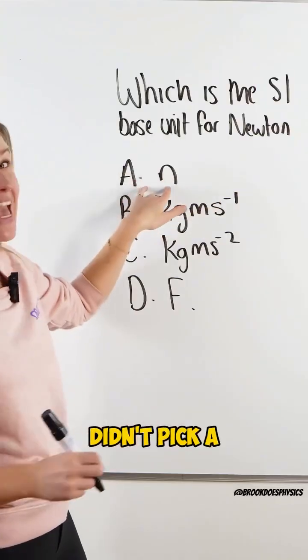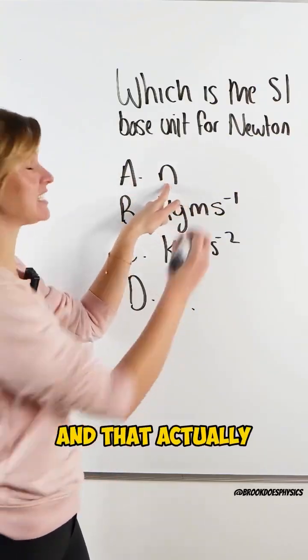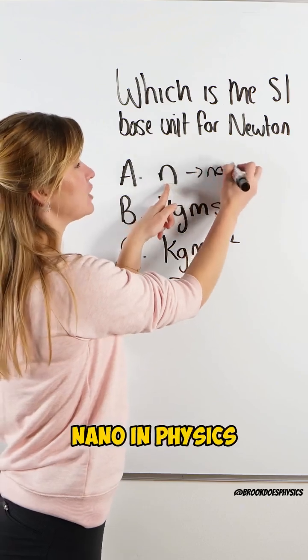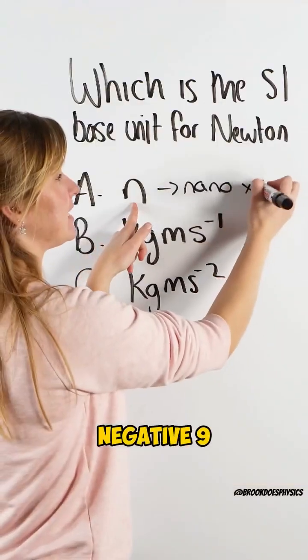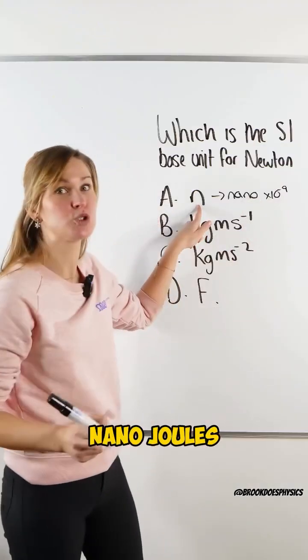So hopefully you didn't pick A because remember that's little n and that actually stands for nano in physics. So nano is like times 10 to the negative 9, like nanometers or nanojoules.